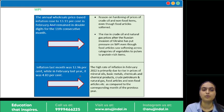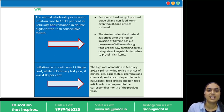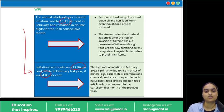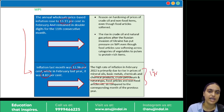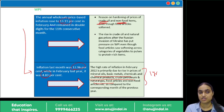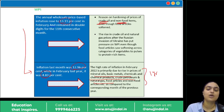Wholesale Price Index (WPI) inflation also increased — from 12.96% in January to 13.11% in February. Compared to the previous year's 4.83%, it has more than doubled, reaching double digits. Year-on-year increase is attributed to higher prices of mineral oil, basic metals, chemical products, crude petroleum, and natural gas. The month-on-month rise was driven by high prices of crude oil and non-food items, particularly due to Russia's invasion of Ukraine driving up crude oil and natural gas prices.